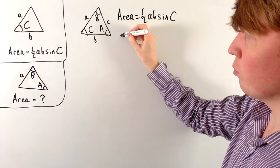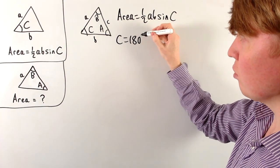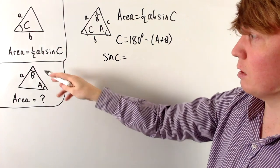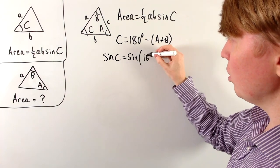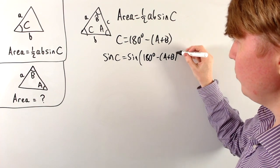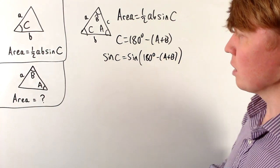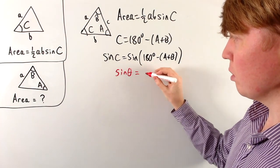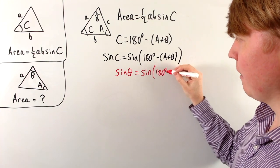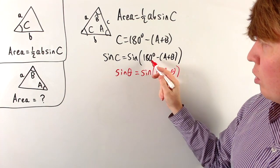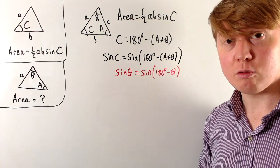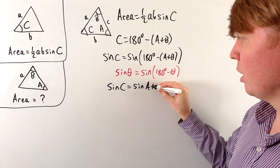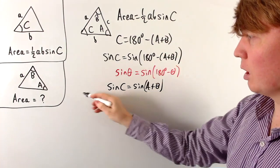We can work out C easily: C is just 180 degrees minus A plus B. So when we calculate sine C, we can express this as sine of 180 degrees minus (A plus B). Using the trig identity that sine theta is always equivalent to sine of 180 minus theta, we can simplify sine C to just sine of A plus B, which we'll substitute into the formula later.